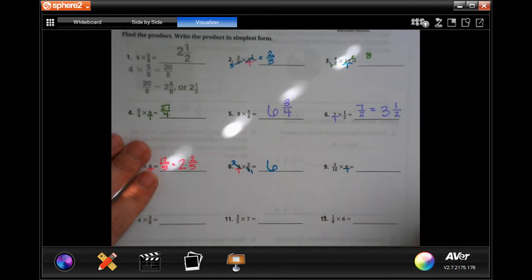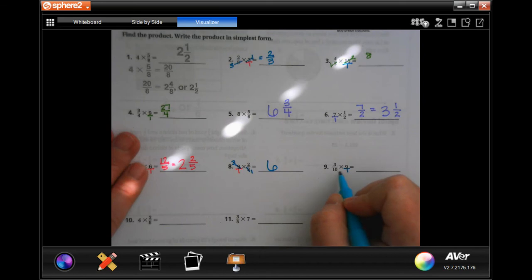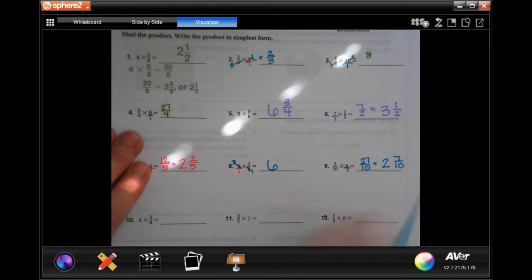Put our 9 over 1. Can't reduce anything. 3 times 9, 27. 10 times 1, 10. 10 goes into 27, 2 times for 20. 2 times 10 is 20. 27 minus 20 would be 7, and our denominator stays the same.